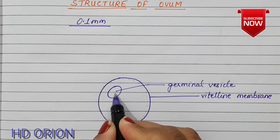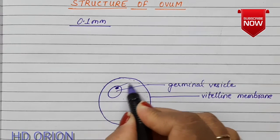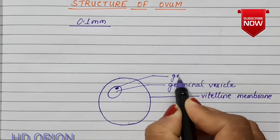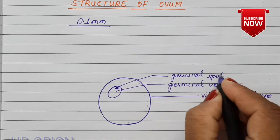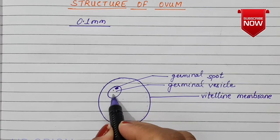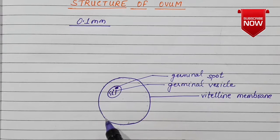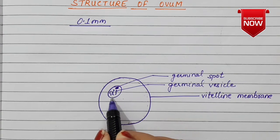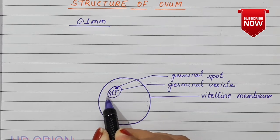The nucleus in the ovum is called the germinal vesicle. Inside the nucleus, the nucleolus is found and this is known as the germinal spot. The nucleus contains all the DNA — the haploid number of chromosomes, that is X — and the hereditary information. After fertilization, this will fuse with the male's chromosomes, either X or Y.